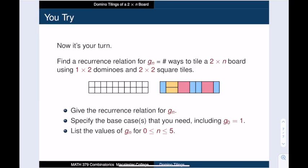Okay, now it's your turn to come up with a recurrence relation. Here is another tiling problem. I want to know how many ways there are to tile a 2×n board using 1×2 dominoes and 2×2 square tiles.